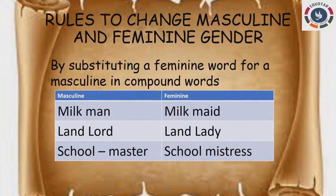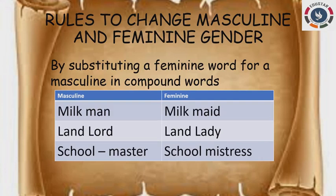One more rule is: by substituting a feminine word for the masculine part in compound words, we can change masculine gender to feminine. For example, 'milkman' is a compound word — changing 'man' to 'maid' gives 'milkmaid,' the feminine. Likewise, 'landlord' — changing 'lord' to 'lady' gives 'landlady.' And 'schoolmaster' — changing 'master' to 'mistress' gives 'schoolmistress.' Is it clear, students?